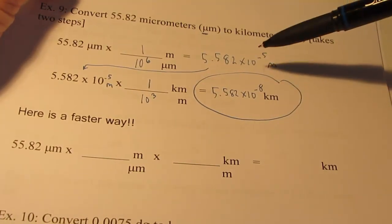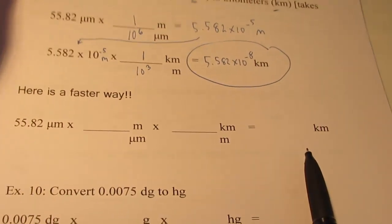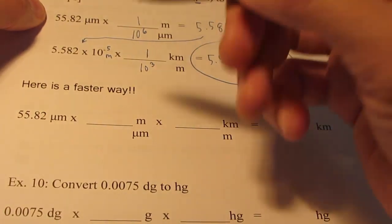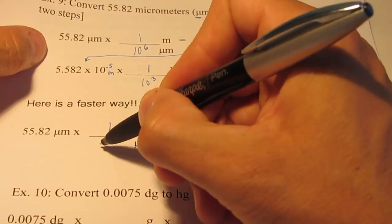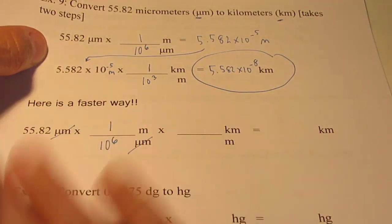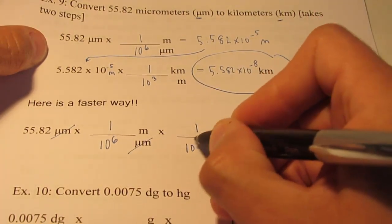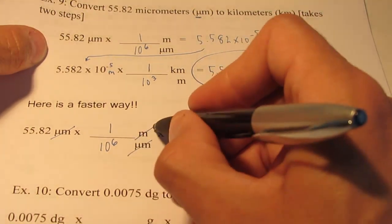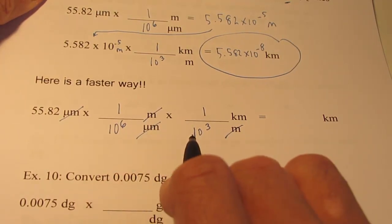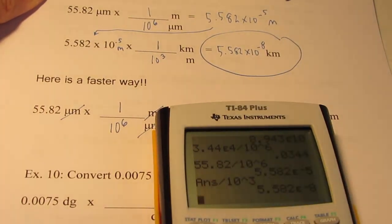We usually don't break it up into two separate steps — we do it as one expression. You can plug in both conversion factors together. Remember: one meter was the same as ten to the sixth micrometers, so micrometers divide out. Then hop out of meters into kilometers: one kilometer equals ten to the third meters, and meters divide out. So you divide by ten to the sixth and then by ten to the third, which is really dividing by ten to the ninth.